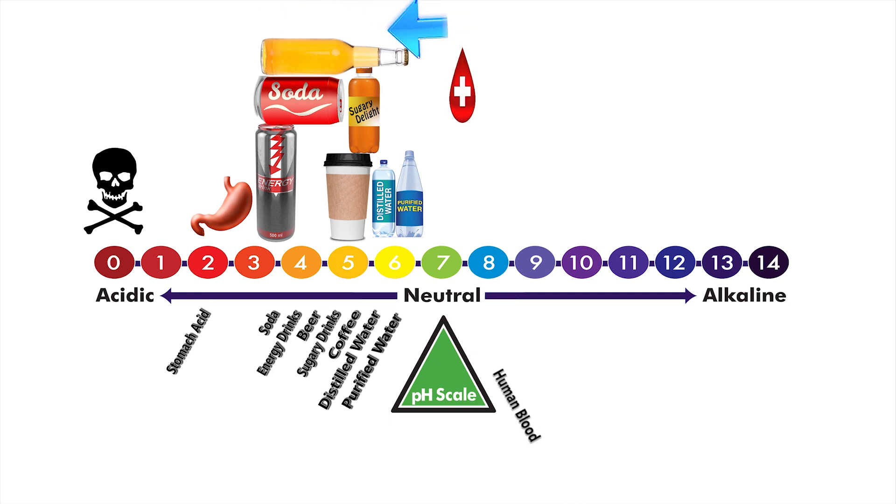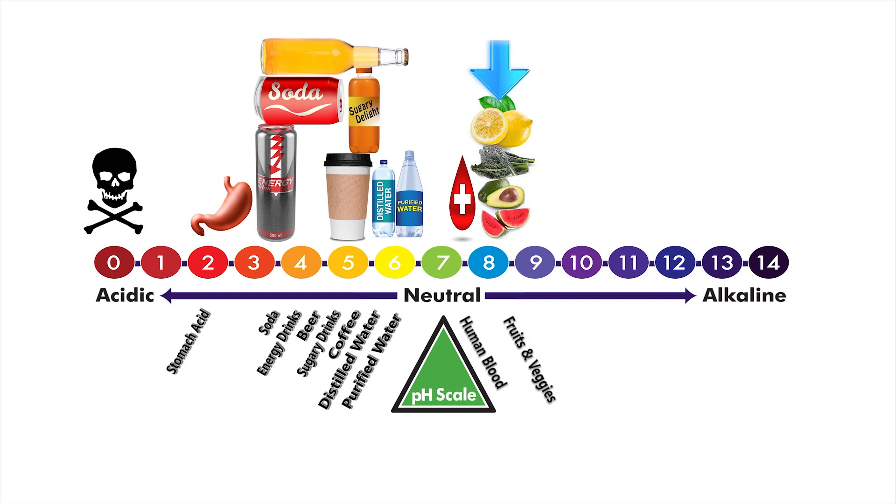On the other side of the scale, human blood is maintained at a slightly alkaline pH of 7.4. Many fruits and vegetables are alkaline forming and can fall between 7.5 to 9.